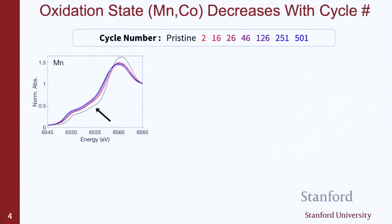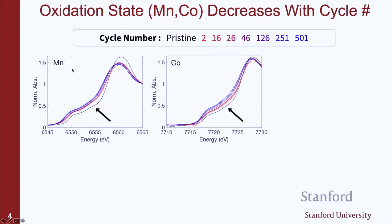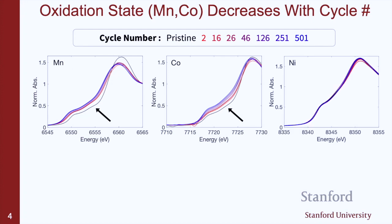If we look at our own material as a function of cycle number, we see the opposite happening. The pristine material is in black, and as we continue to cycle it, it shifts to lower energy, indicating the transition metal oxidation state is dropping. This is for manganese — exciting from a manganese 1s orbital — and the same thing happens for the cobalt spectra. There are three transition metals in this compound: manganese, cobalt, and nickel. Nickel is about the same, due to the particular electronic structure of this material. In general, the average transition metal oxidation state is dropping.